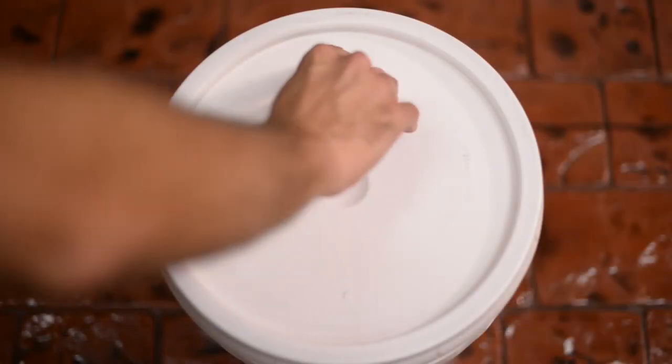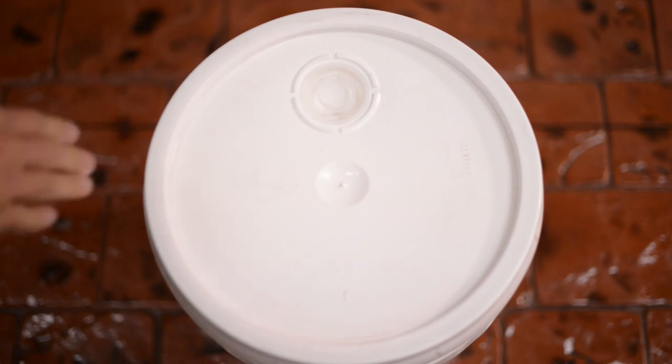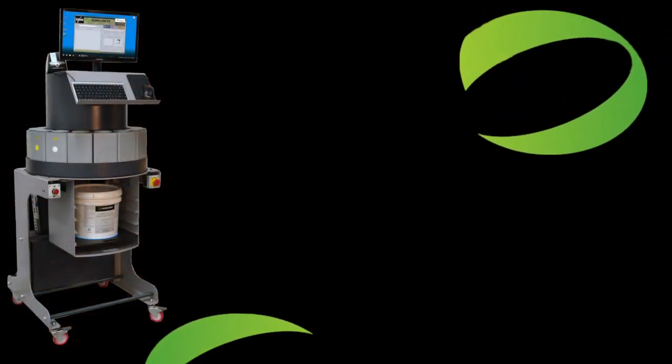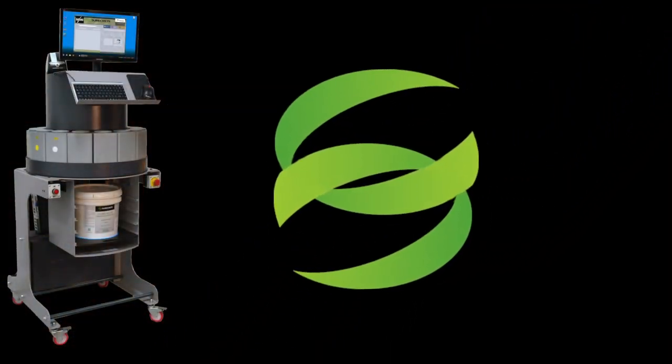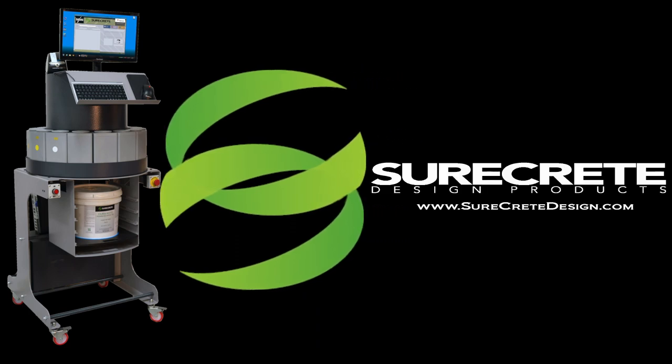Replace the container lid or tint plug and place it in the shaker, allowing for the allotted time depending on the size of the container. Tinting is made simple with the SureCrete Tint machine.